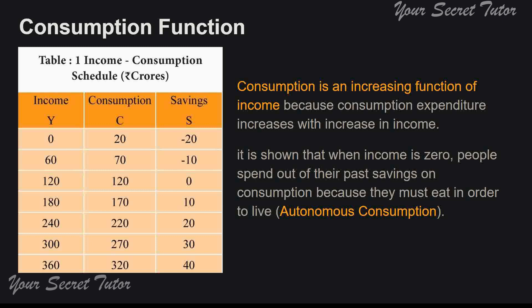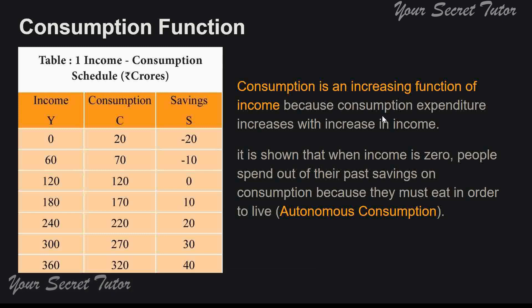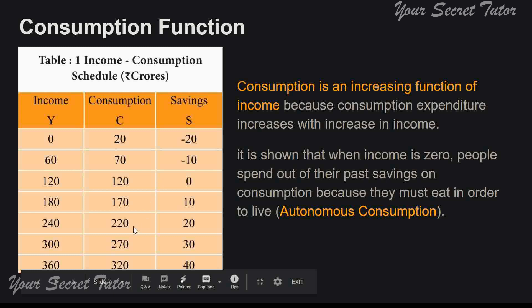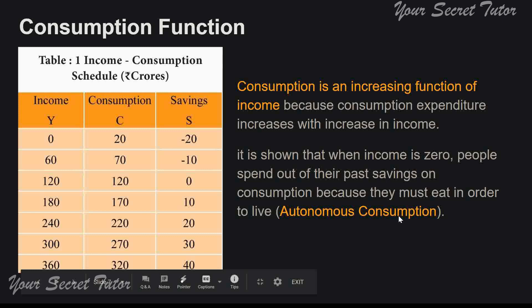Consumption is an increasing function of income because consumption expenditure increases with increase in income. When income is 0, people spend out of their past savings — so there is dis-saving, shown as minus 20 and minus 10. They can also get some loans. That consumption when income is zero is called autonomous consumption.